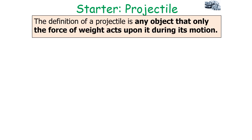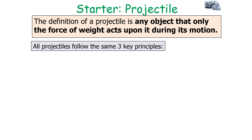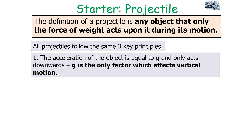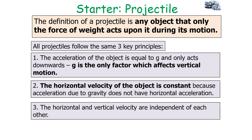The definition of a projectile is any object upon which only the force of weight acts during its motion. All projectiles follow three key principles. First, the acceleration of the object is equal to g, the acceleration due to gravity, and only acts downwards — g is the only factor which affects the vertical motion. Second, the horizontal velocity of the object is constant because gravity has no horizontal component. Third, the horizontal and vertical velocities are independent of each other.